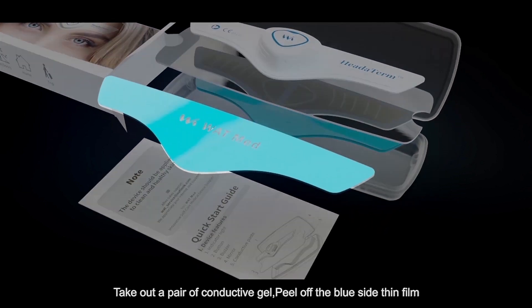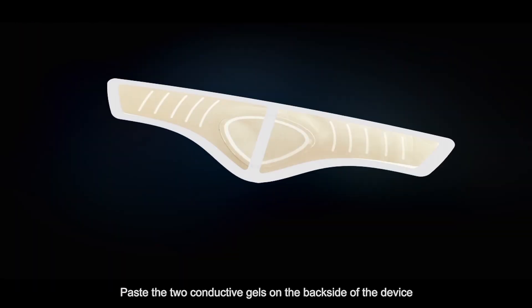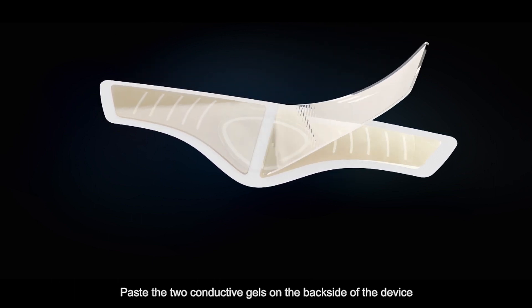Take out a pair of conductive gel. Peel off the blue side thin film. Paste the two conductive gels on the back side of the device.